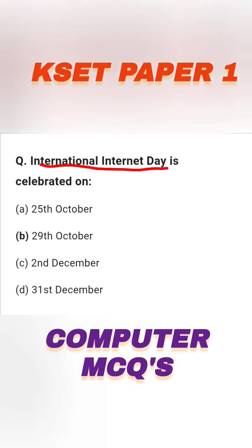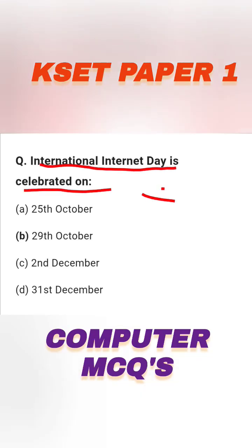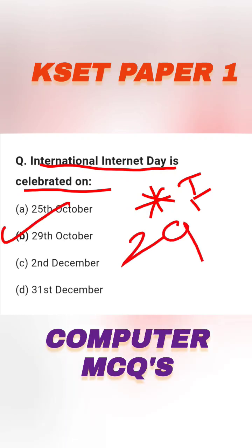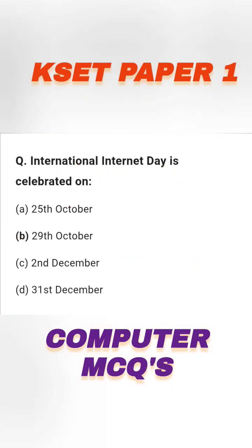International Internet Day is celebrated on which date? This is very important to know. The options are: 25th October, 29th October, 2nd December, or 31st December. The right answer is option B — 29th October. International Internet Day is celebrated on 29th October.